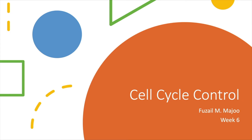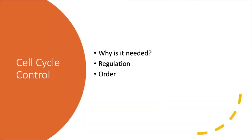This is a week six lecture on cell cycle control. Why is cell cycle control needed? When cells divide, organisms grow — this is how multicellular organisms grow and how repair occurs. So the two main reasons it's needed are to grow multicellular organisms and for repairs to occur.